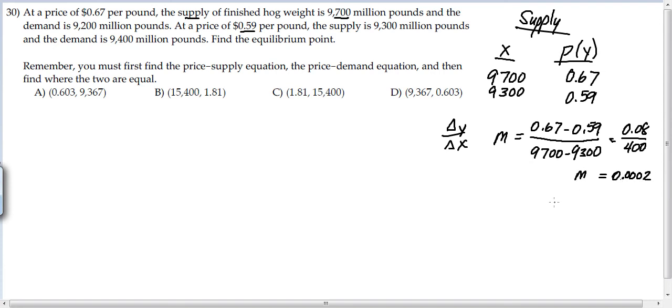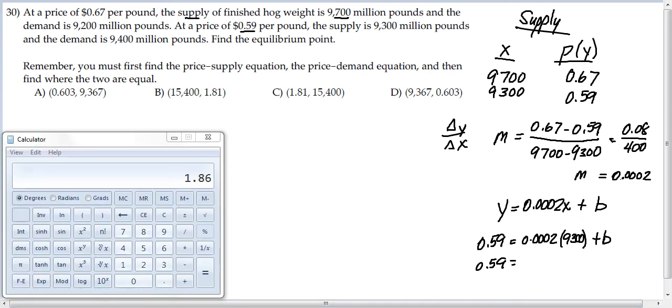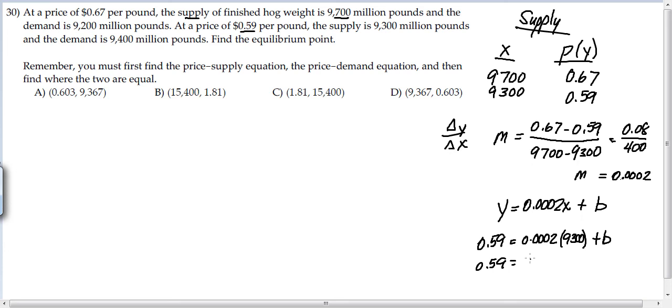So now we'll go find the Y-intercept for that. So we start out with Y equals 0.0002X plus B. And then we use one of these pairs of values to go find that when the price is 0.59 and the supply is 9,300. And there we find B. So we get 0.59 equals, and let me get my calculator out. So when I do that calculation there, I get 1.86 plus B.